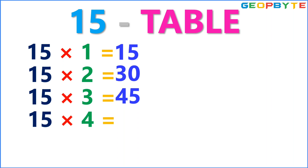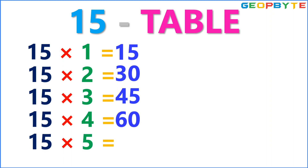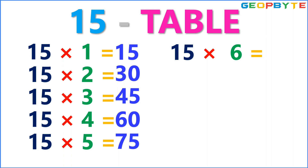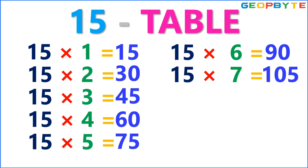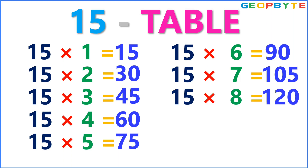15 fours are 60. 15 fives are 75. 15 sixes are 90. 15 sevens are 105.